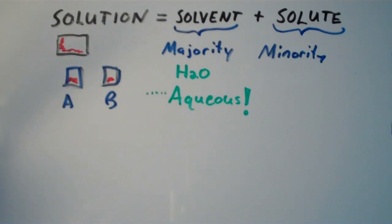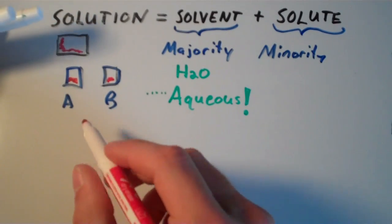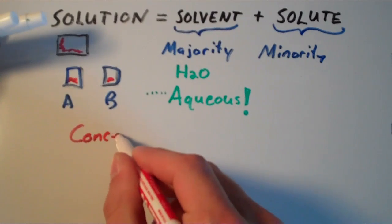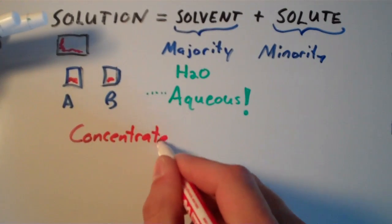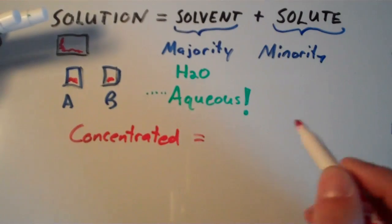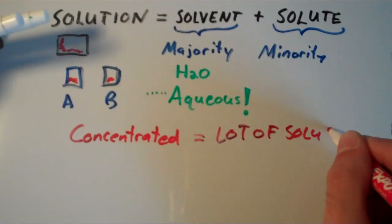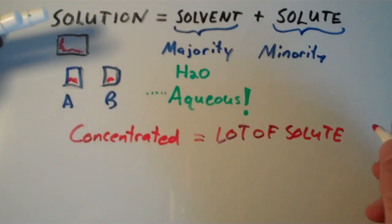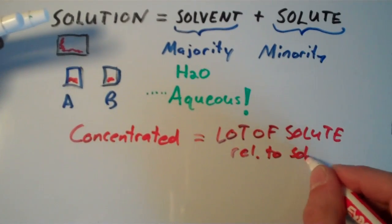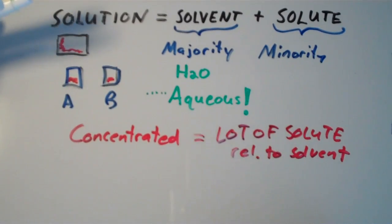So there's aqueous solutions. Now we need to figure out how to express the amount of solute relative to the solvent. So that's called the concentration of the solution. So there's two general terms when we talk about solution concentration, and one of them is concentrated. So if a solution is concentrated, that means we have a lot of solute, a lot of solute relative to the solvent if our solution is concentrated.